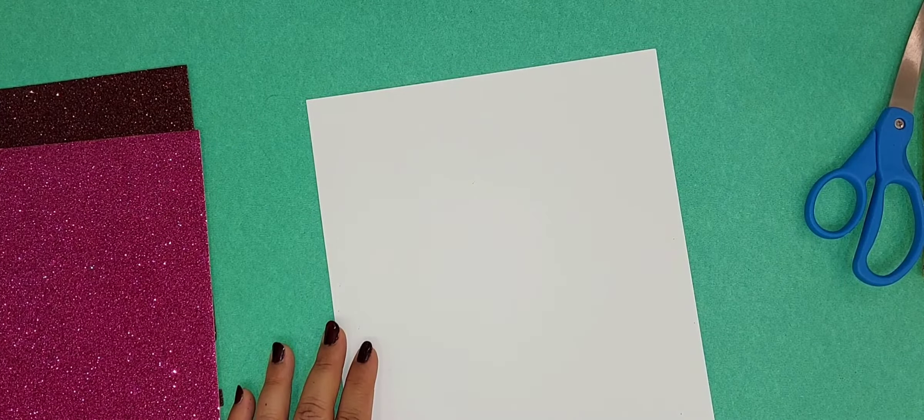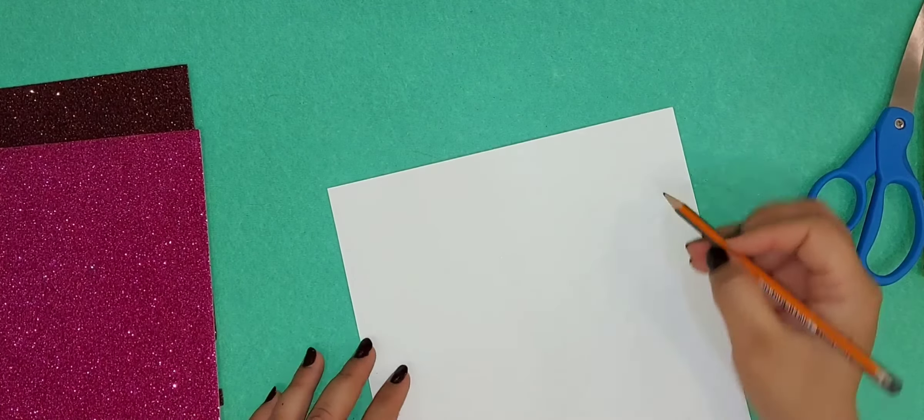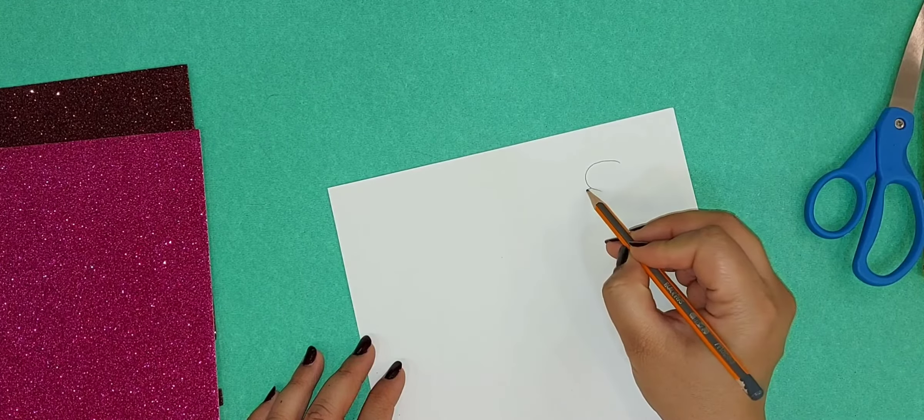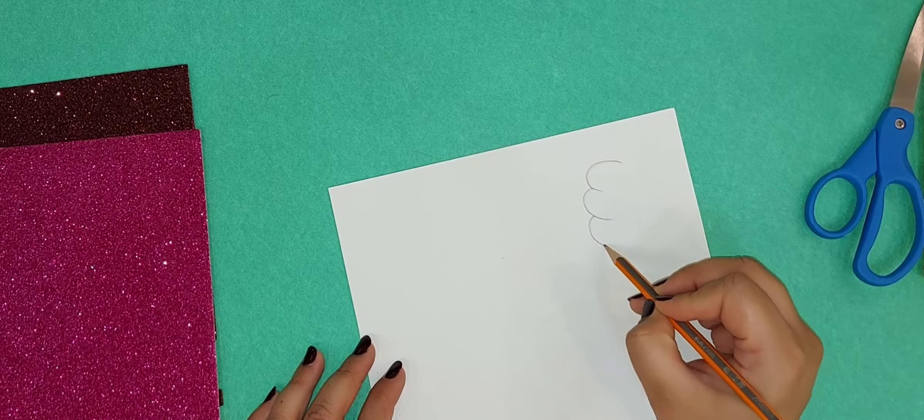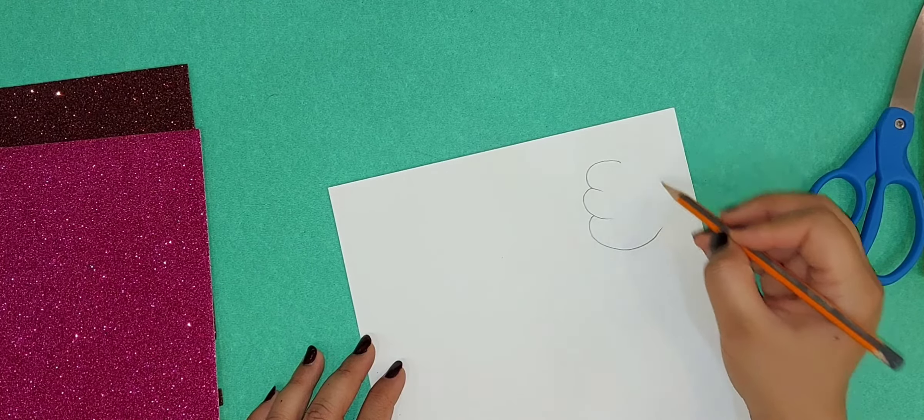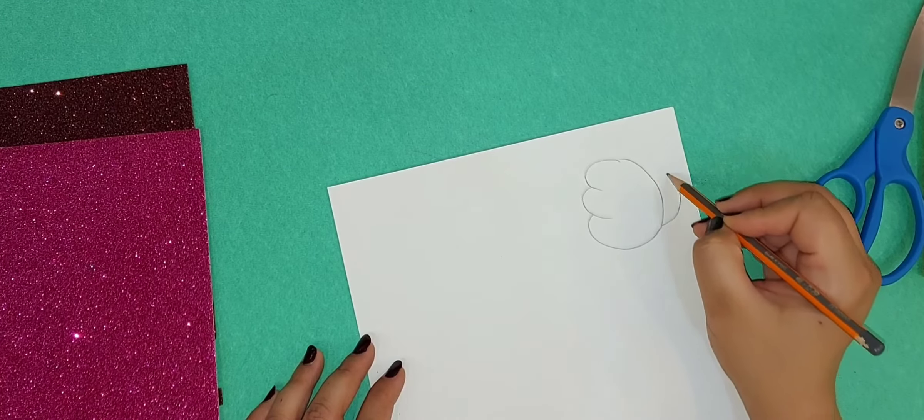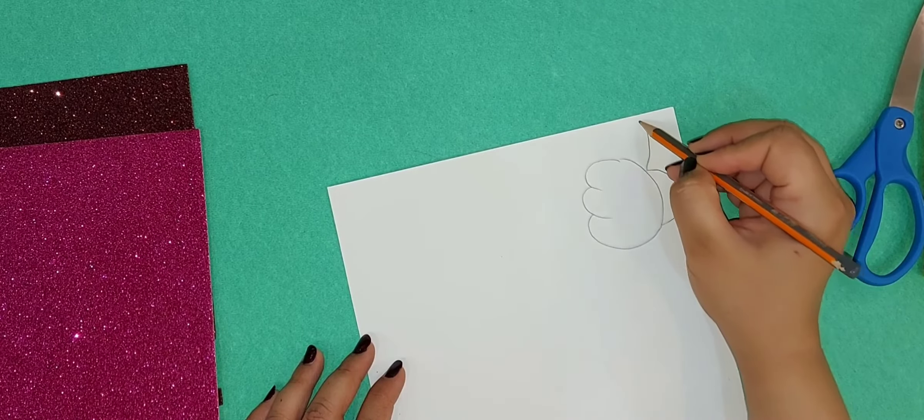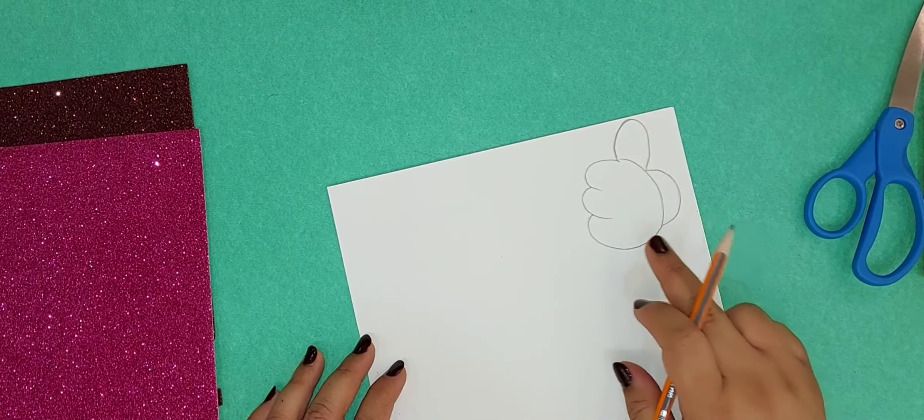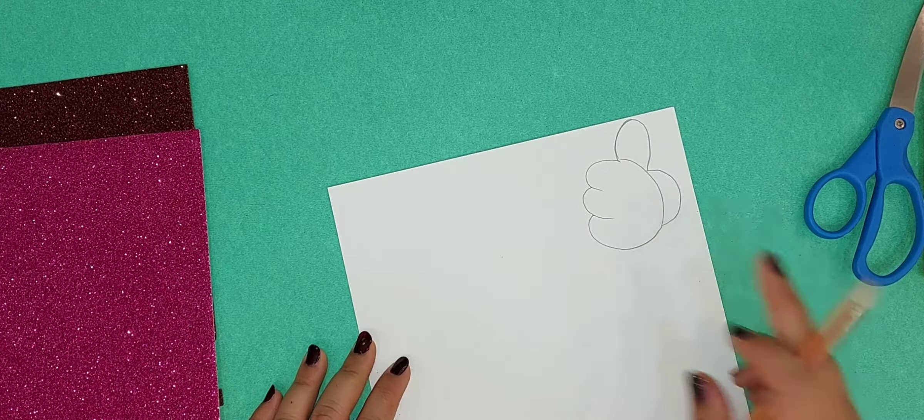First of all, we will take white sheet and draw two little hands. We will draw it with the pencil and then we will do the cutting. We need two hands and also we need...